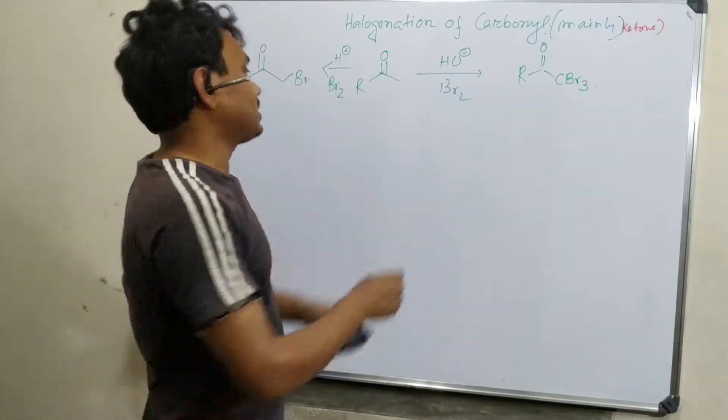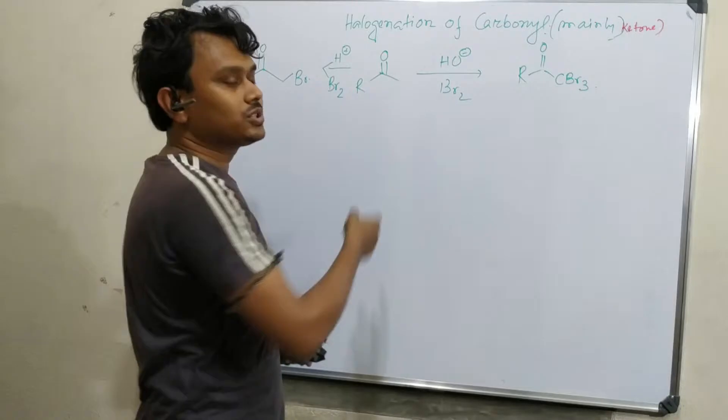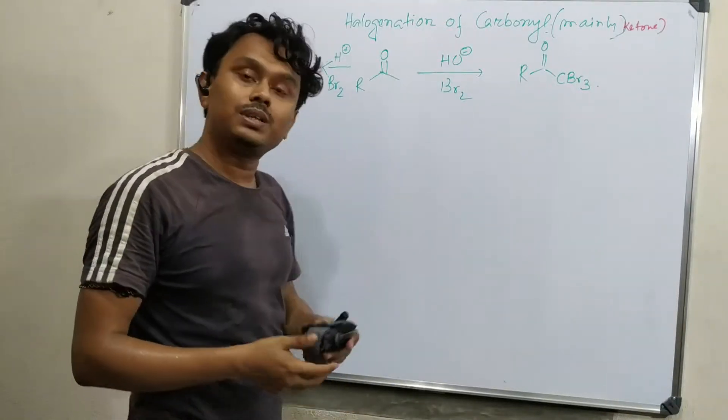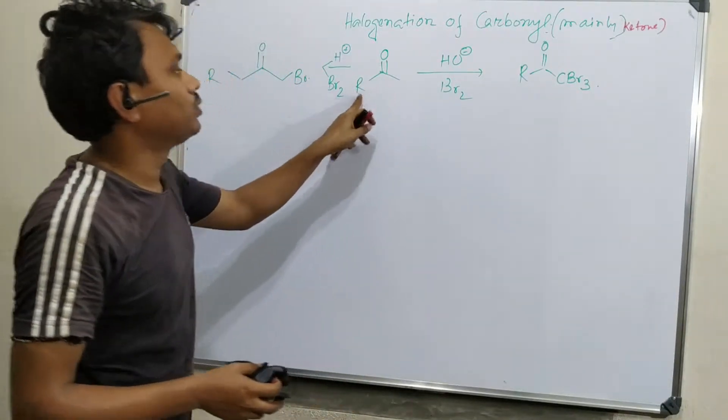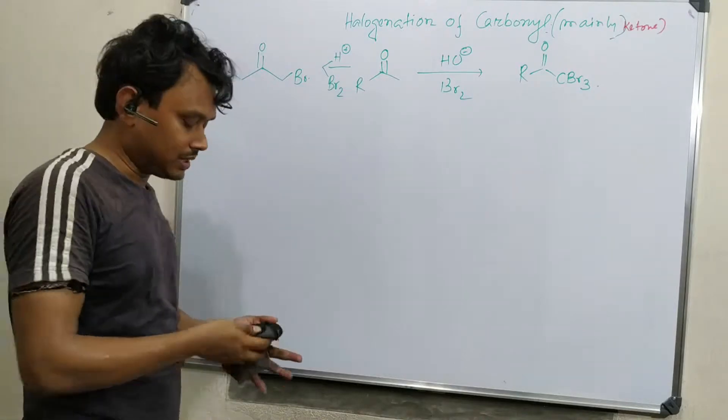The difference between ketone and aldehyde: one hydrogen is attached to the carbonyl group in aldehyde. Both are carbon in ketone.